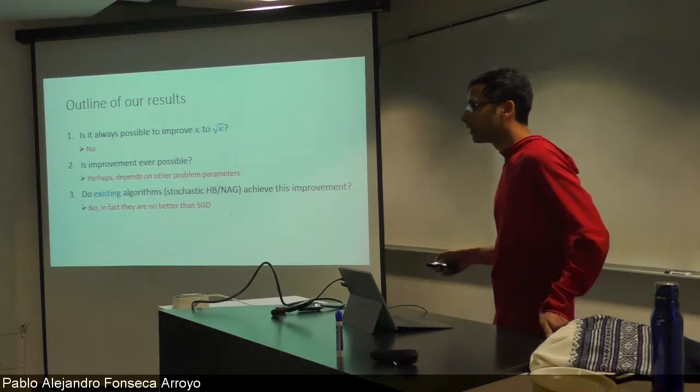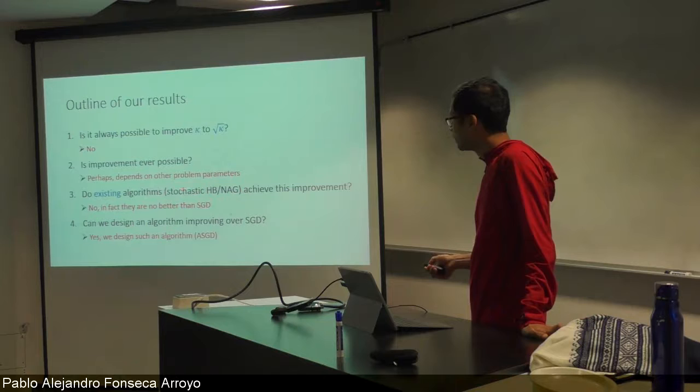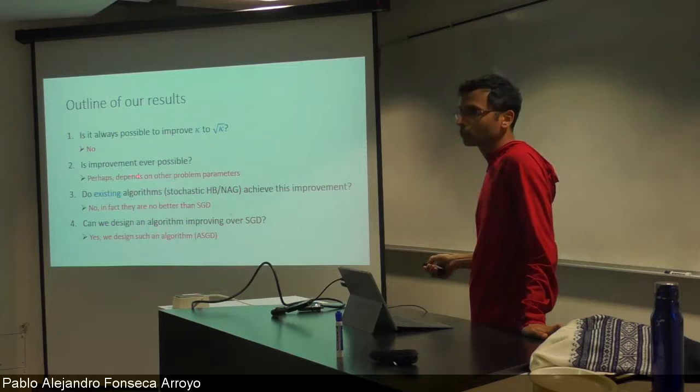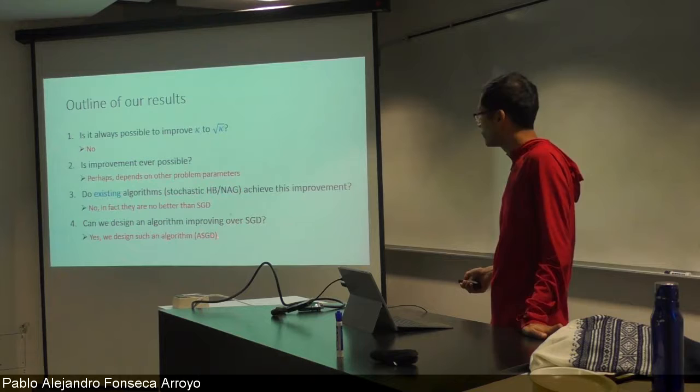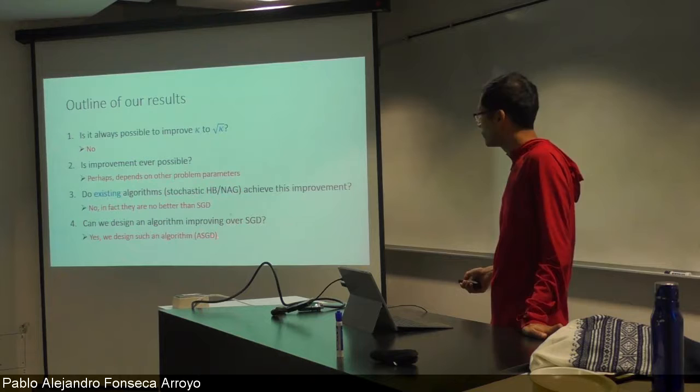Here is a broad outline of our results. First, we ask whether it is always possible to improve κ to √κ as in the deterministic setting — the answer is no. Second, it can be improved on some problems but only depending on other problem parameters beyond the condition number. Third, existing algorithms like stochastic heavy ball and Nesterov cannot achieve this improvement and are no better than SGD. Finally, we design a new algorithm, Accelerated Stochastic Gradient Descent (ASGD), which does achieve provable improvements over SGD.